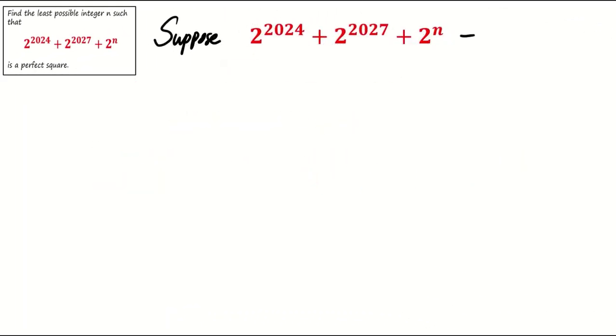Suppose this expression represents a perfect square, call it m squared. Then 2 to the power of n equals m squared minus 2 to the power of 2024 minus 2 to the power of 2027.